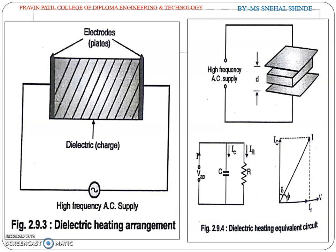Because of the leakage current IR, the current flowing through the dielectric does not lead the applied voltage exactly by 90 degrees. The phase angle is always less than 90 degrees. Where d is the distance between the plate electrodes, A is the area of the plate, epsilon R is the relative permittivity of the dielectric medium, and epsilon 0 is the absolute permittivity.